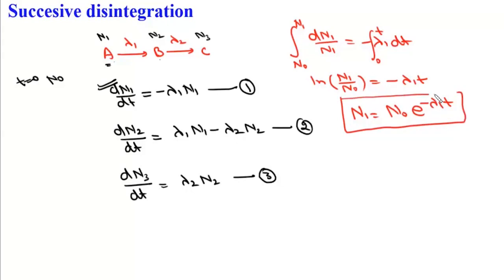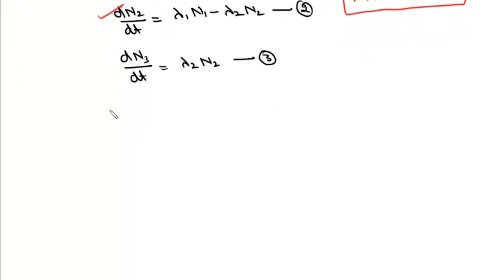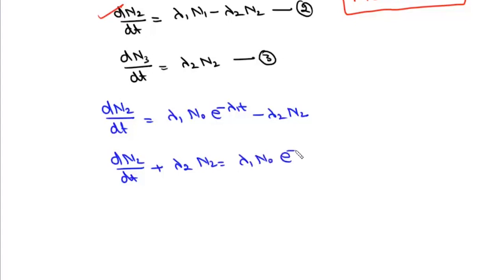Once we have N1, we can find N2 using the second equation. Substituting N1 equals N0·e to the power minus λ1·T, we rearrange to get dN2/dT plus λ2·N2 equals λ1·N0·e to the power minus λ1·T.